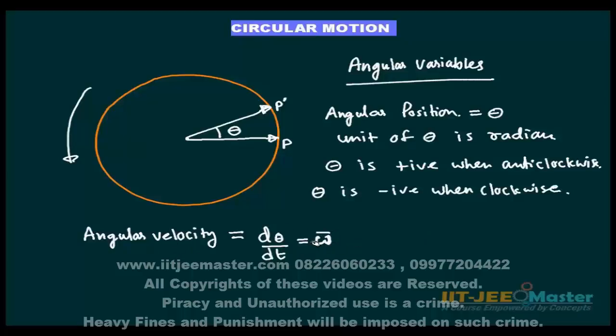And one thing we need to understand is d theta is angular displacement. Where d theta is a vector if d theta is small, it is very small. Here d theta is a very small quantity. If d theta is very small then it holds the properties of vectors. And if d theta is more then it doesn't hold vector properties. And this we can understand but now we don't have time to explore it much. We will include it in other section.